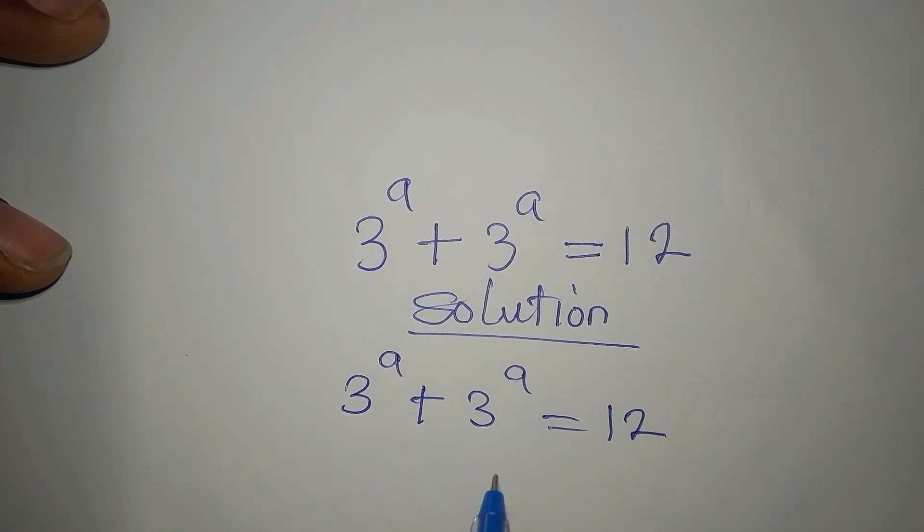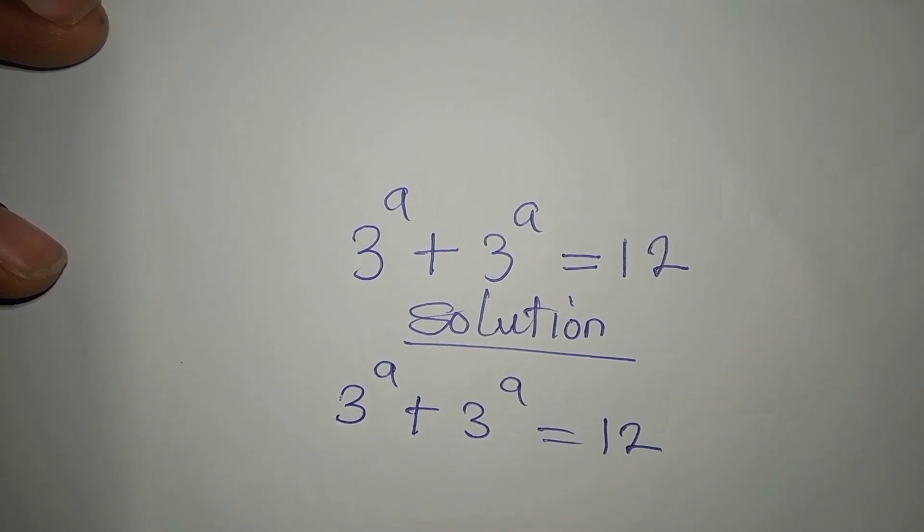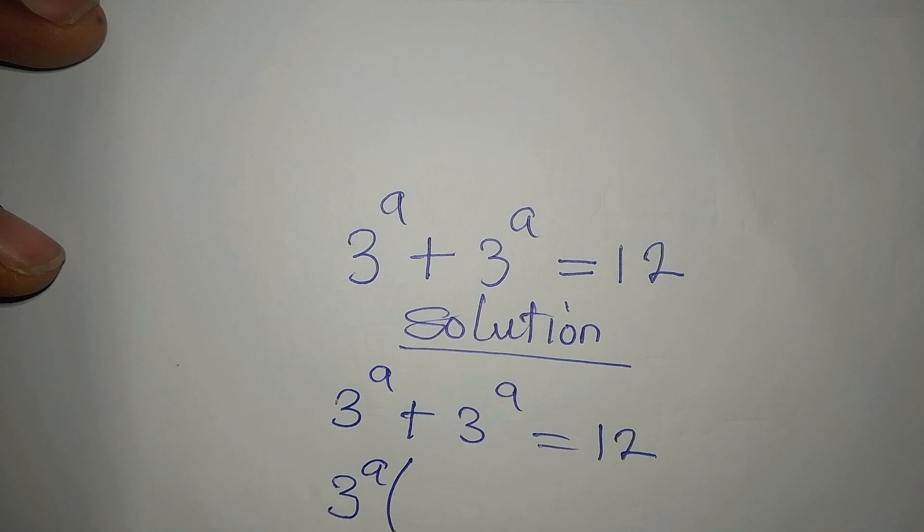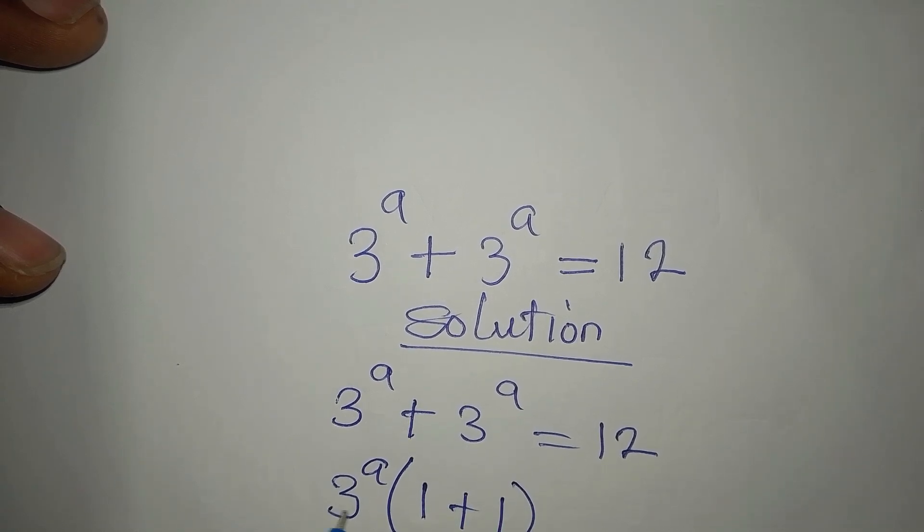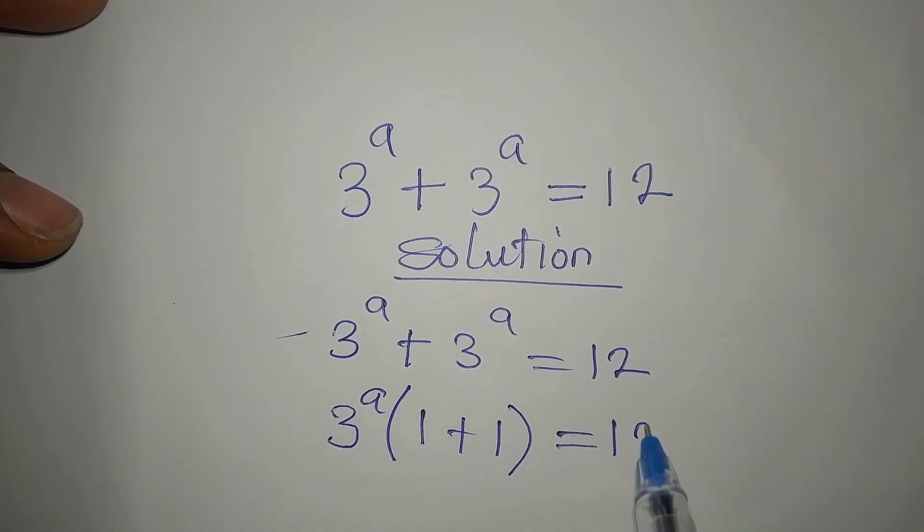Do not introduce log yet. You can simplify it before introducing log, right? Okay, so to simplify, 3 to the power of a is a common term to these two. So we have 1 plus 1. If you multiply this, if you open the brackets, you are going to have this, right? So this is equal to 12.